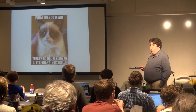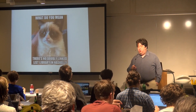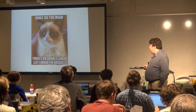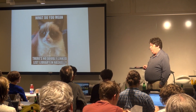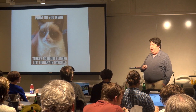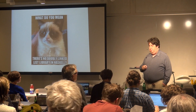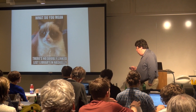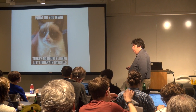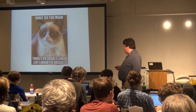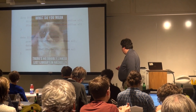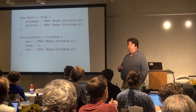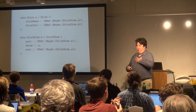So we go to use a doubly-linked list and discover there is no standard doubly-linked list library in Haskell. This is odd, but it's an opportunity to write some code. We dig in and start going — we're going to implement a doubly-linked list library. How hard can it be?